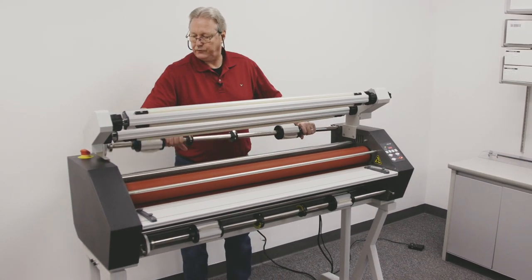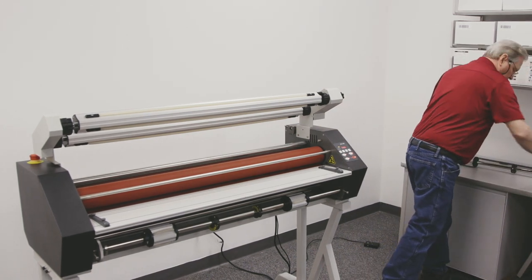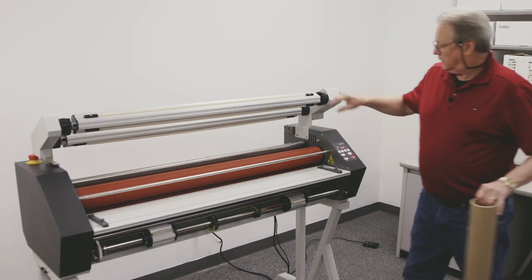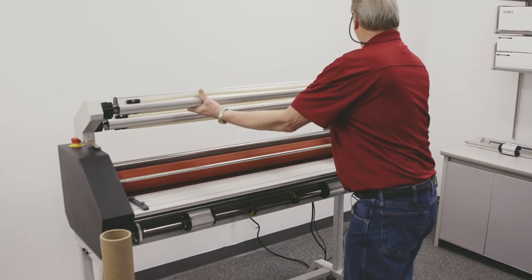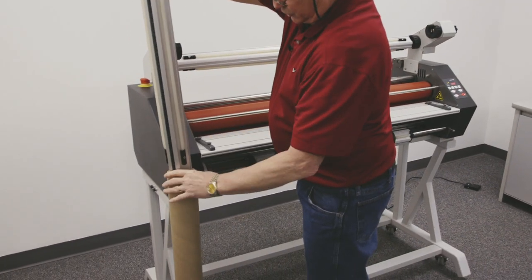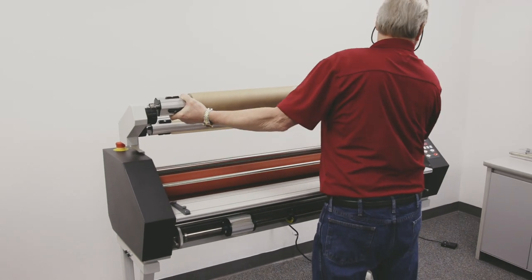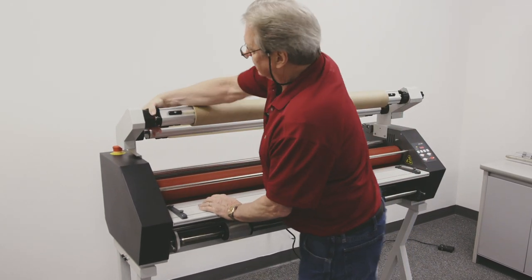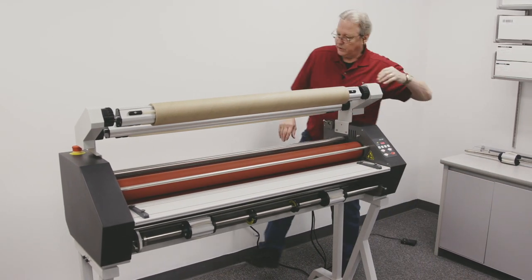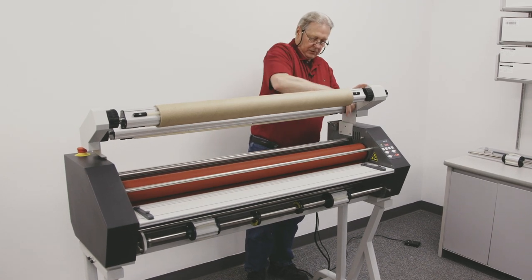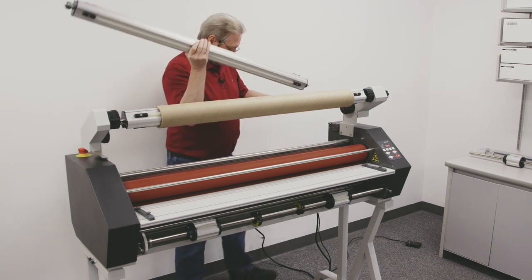We're going to remove this film supply shaft and I will put a rewind tube on our rewind shaft. Lock that in place and then we will put the PSA film on our supply shaft.